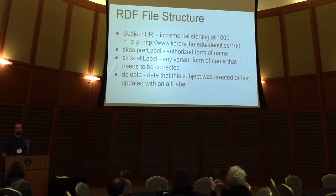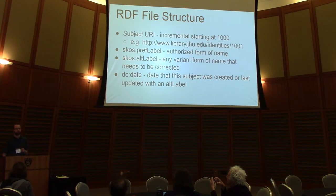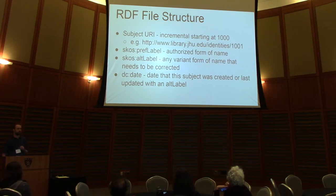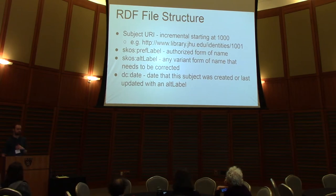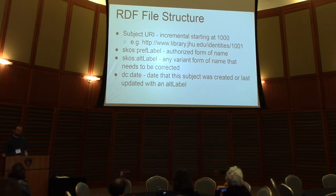We settled on RDF as a possible solution mainly because we could have one subject URI representing a particular faculty member. That URI would be assigned a single SKOS prefLabel triple for the authorized form of the name we wanted to use, and it could have multiple SKOS altLabels for any variations that had been entered into the system that needed to be corrected. We also included a DC date property as a last-modified field for tracking and assessment purposes.